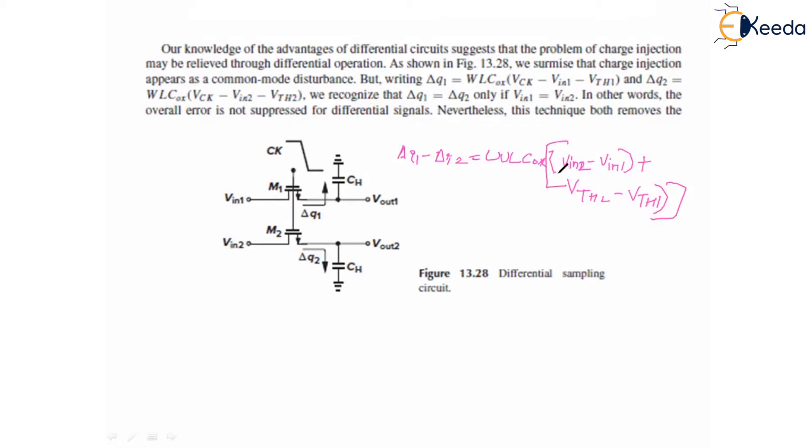We can also write it as WLC_OX in brackets (V_IN2 + V_IN1) minus, plus gamma times square root of (2φ_f + V_IN2) minus square root of (2φ_f + V_IN1), simply substituting the value of V_TH threshold voltage.